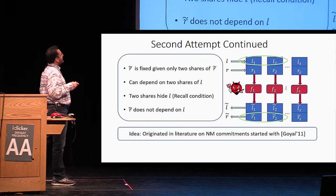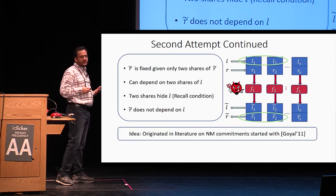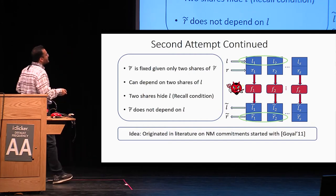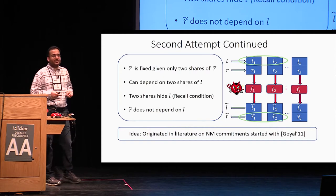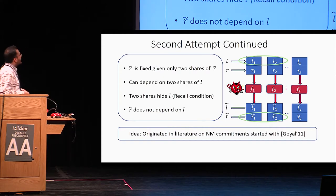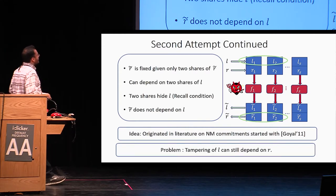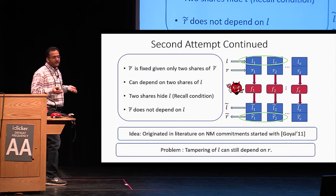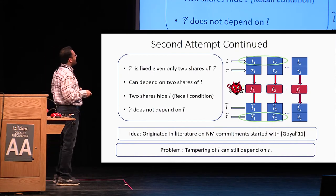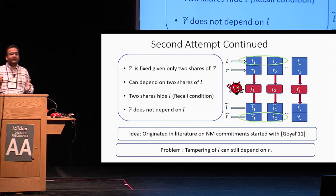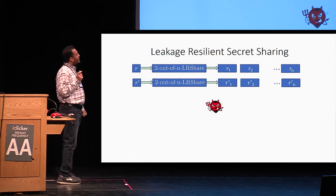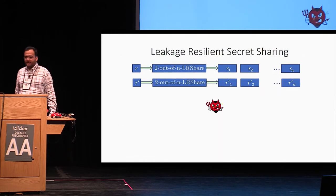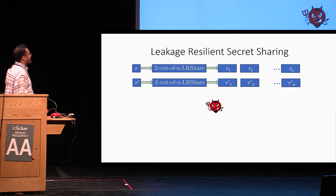This idea originates in the literature on non-malleable commitments, starting with work of Goyal, and several subsequent works have used it. This allows us to make some progress, but we are still not done. The reason is that L-tilde can still depend on R, so we only get one-sided non-malleability.